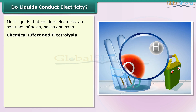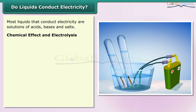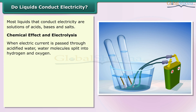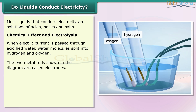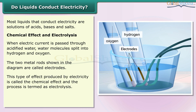When electric current is passed through acidified water, water molecules split into hydrogen and oxygen. The two metal rods shown in the diagram are called electrodes. This type of effect produced by electricity is called the chemical effect, and the process is termed as electrolysis.